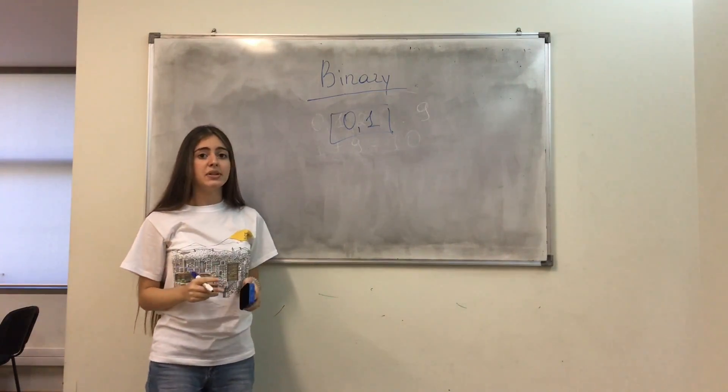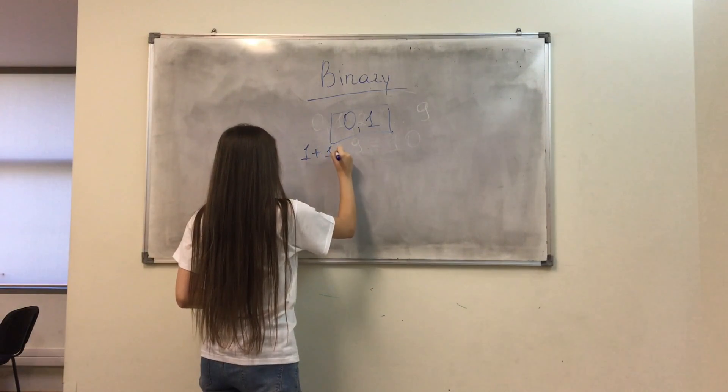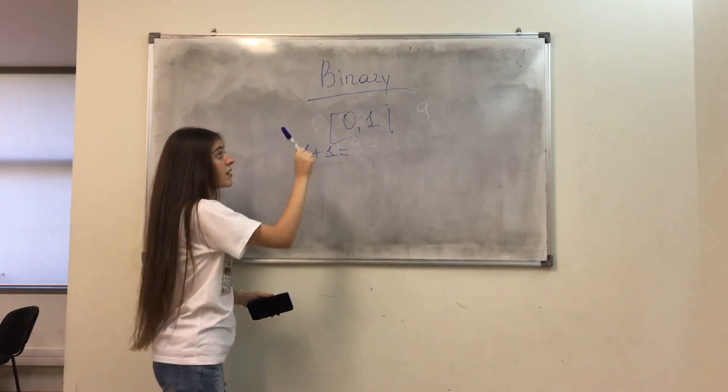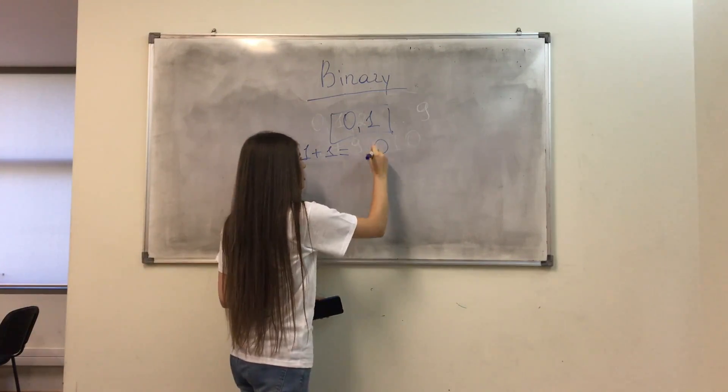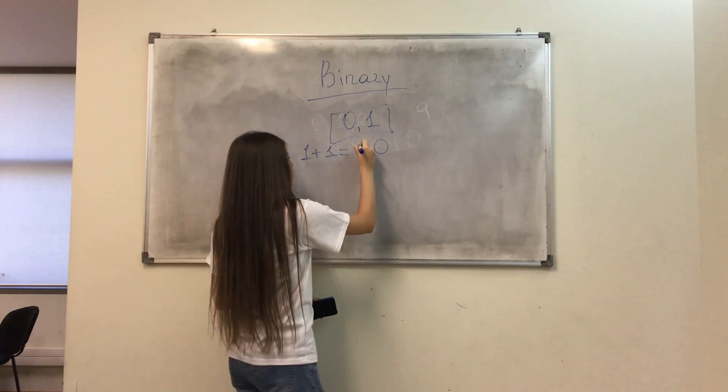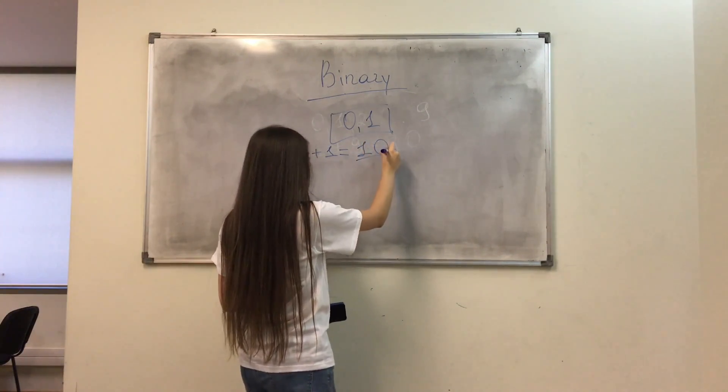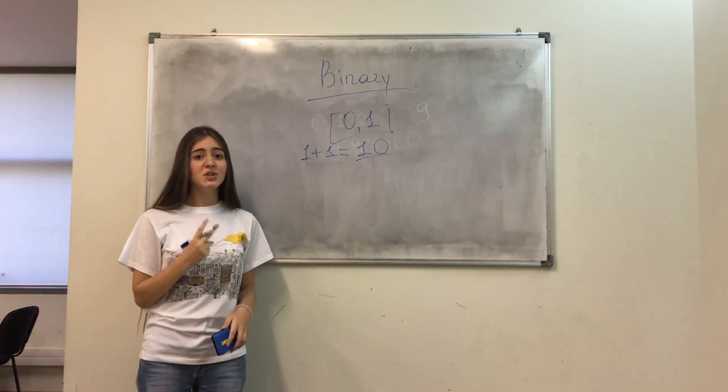So if I want to get the number 2, I should add 1 to 1. But there are no more numbers to write, so I will get the first digit 0 and I will pass 1 to the left position. This means that the number 10 in a binary system represents the number 2.